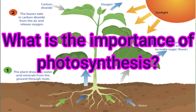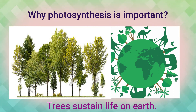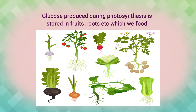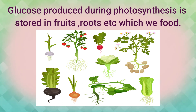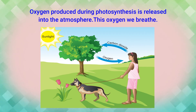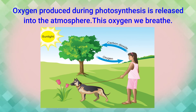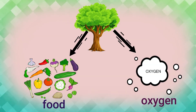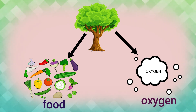What is the importance of photosynthesis? What will happen if there is no photosynthesis? Trees sustain life on Earth. Glucose produced during photosynthesis is stored in fruits, roots, etc., which we eat — meaning we get food from plants through photosynthesis. Oxygen produced during photosynthesis is released into the atmosphere, and this is the oxygen we breathe. All animals, including us, depend on plants for food and oxygen. No photosynthesis means no life on Earth.